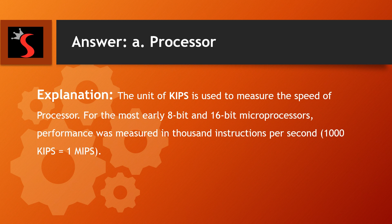The right answer is option A. Processor. Explanation: The unit KIPS is used to measure the speed of a processor. For the most early 8-bit and 16-bit microprocessors, performance was measured in 1000 instructions per second.